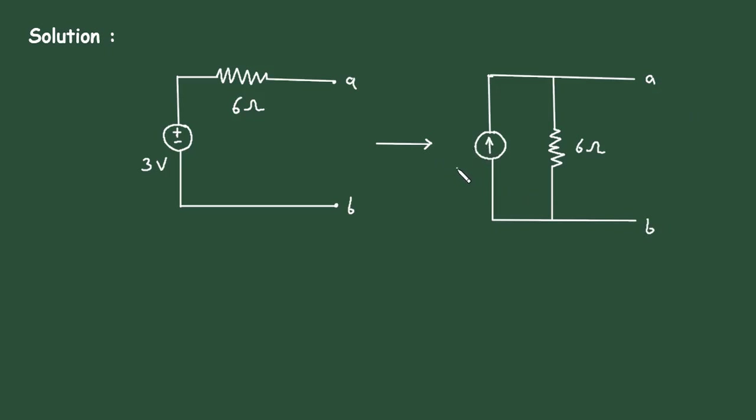Now we want to find the value of this current I. According to Ohm's law, I equals V divided by R, where voltage is 3 volts and resistance is 6 Ohm.